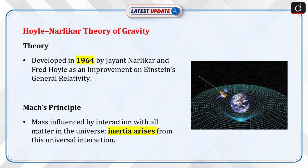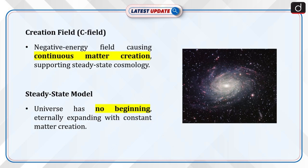Now let's discuss the Hoyle-Narlikar Theory of Gravity. This theory was developed by Jayant Narlikar and Fred Hoyle in 1964 as an improvement on Einstein's General Theory of Relativity. The theory is based on Mach's principle, which states that the mass of an object is influenced by its interaction with all other matter in the universe. Hoyle and Narlikar proposed that the inertia of an object arises due to this universal interaction, meaning mass and gravity are interconnected through all matter.